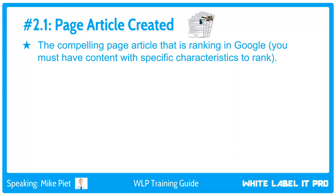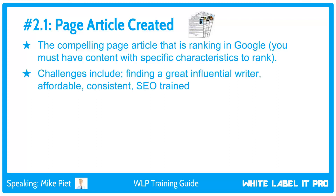The article must be written in a very specific way — compelling to read, builds trust, educates, has a call to action, etc. It has to be efficient at getting the reader to take action to become a lead or sale. The challenge is that while everyone says they're a great writer, only a few can actually write content that makes people take action. Not only do you need to find these writers, but it also needs to be an affordable process — cheap writers produce poor content that needs rewriting, while expensive writers aren't profitable.